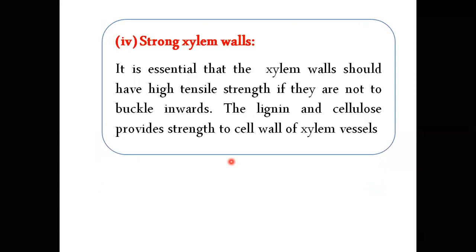Number four: strong xylem walls. It is essential that the xylem walls should have high tensile strength — if they are not to buckle inward. Xylem cells ki diwaron ko andar ki taraf nahi marna, to zaruri hai ke xylem vessel walls mein tension ko bardaasht karne ki ability ho. The lignin and cellulose component provides strength to the cell wall — xylem vessel ki cell wall cellulose aur lignin ki bani hoi hai jis ki wajah se xylem vessel ki wall strong hoti hai aur andar ki taraf bend nahi hoti, is liye water column break nahi hota.